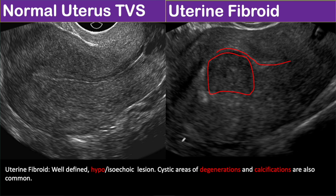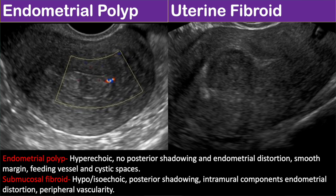The top differential of submucosal fibroid is endometrial polyp. Now look at these two images. On the right hand side you can see an elongated hypoechoic mass with smooth margins. There is no distortion of the endometrium and there is no posterior acoustic shadowing. Additionally, you can see a feeding vessel supplying the endometrium. All of these features are suggestive of endometrial polyp.